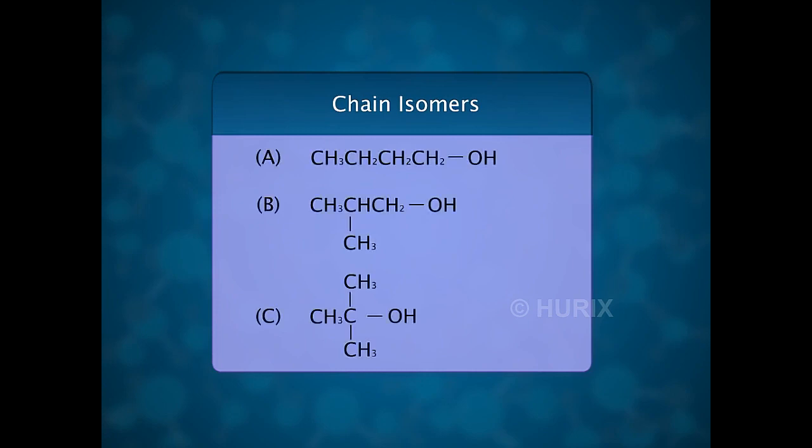Isomers differing by the nature or by the length of the carbon chain are called chain isomers. Let's consider the three molecules A, B and C. All of them are butyl alcohol with the same molecular formula, C4H9OH. Since the nature of their carbon chain is linear in structure A and branched in structures B and C, they are called chain isomers.